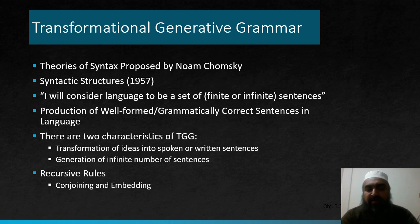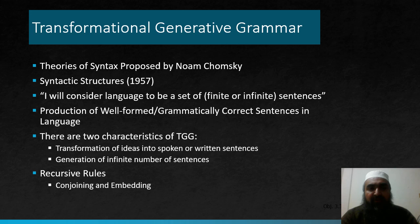The term Transformational Generative Grammar refers to theories of syntax which were first proposed by American linguist Professor Noam Chomsky in his book Syntactic Structures, published in 1957. Professor Noam Chomsky was influenced by mathematics, and due to this influence he defined language in a very mathematical way.